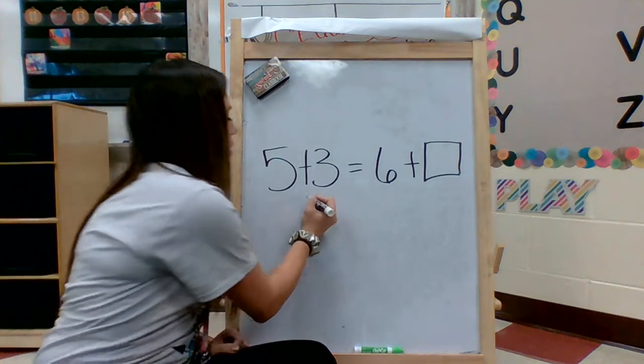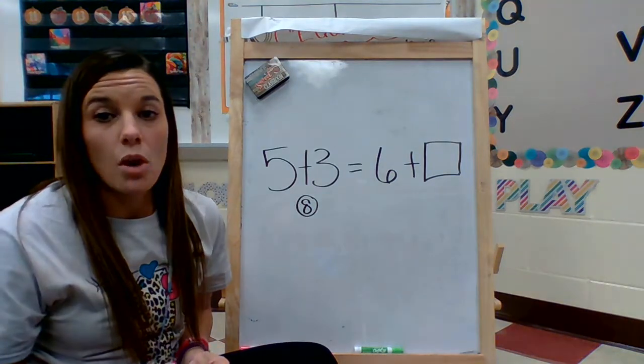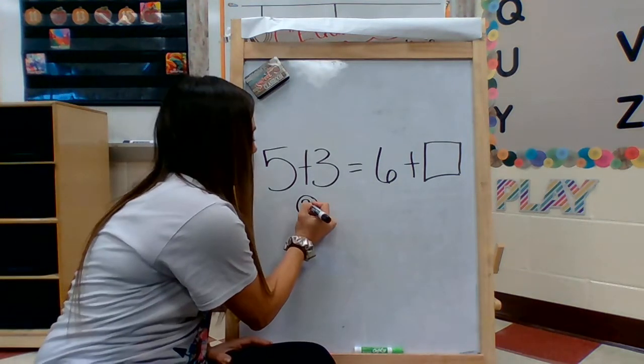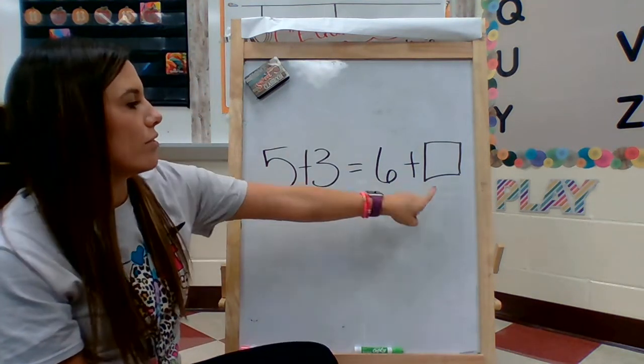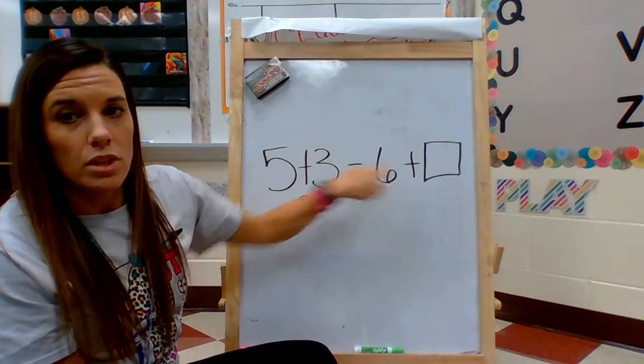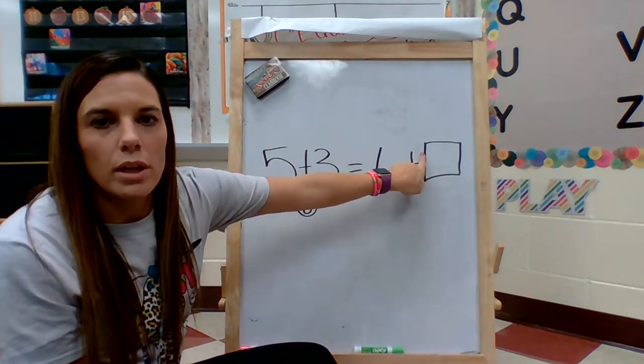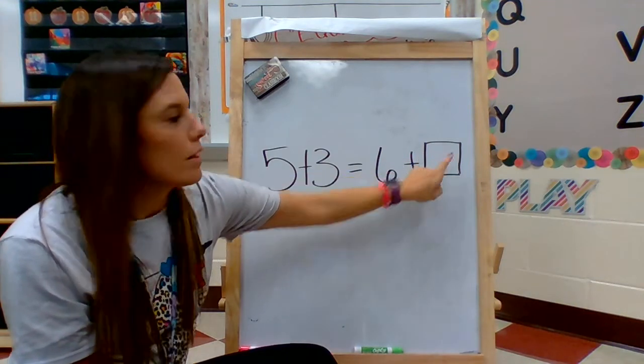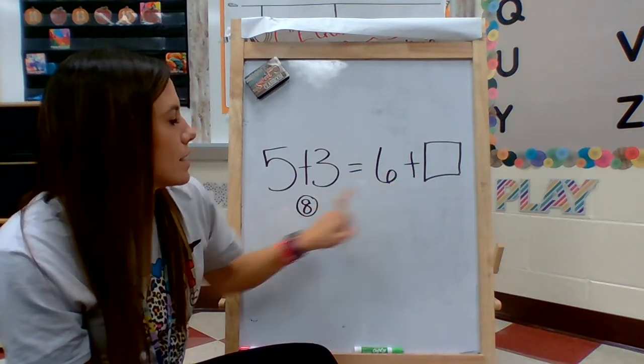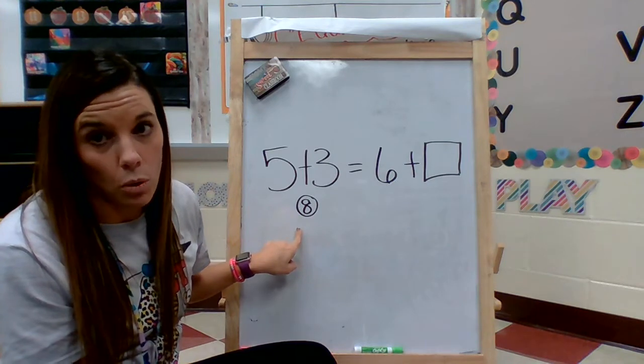Right down here, I'm going to write the number 8. So in order for us to make sure that these two equations are equal to each other, we have to figure out what number to put in here that we can add to 6 to get to 8. That is our goal.